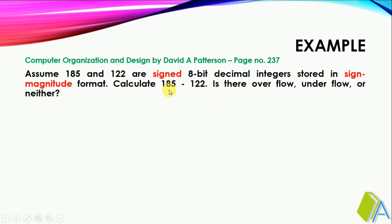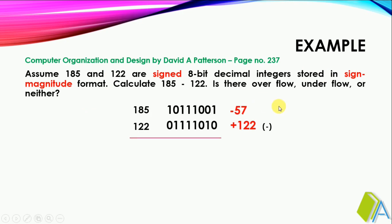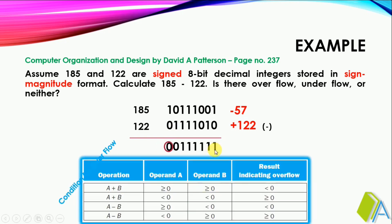Finally, considering the same numbers in signed magnitude format — minus 57 and plus 122 — but performing subtraction instead of addition. Performing binary subtraction with borrowing, the result has MSB 0, indicating a positive number. According to the overflow condition, if we subtract a positive number from a negative number and the result is positive, that is an indication of overflow. Therefore the answer is overflow. Thank you.